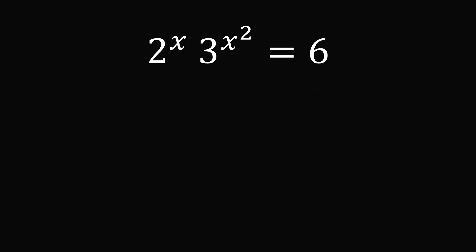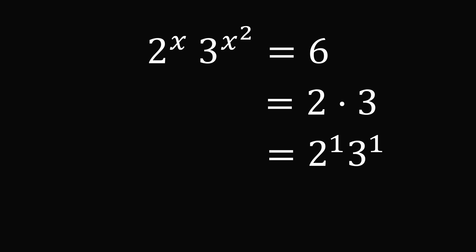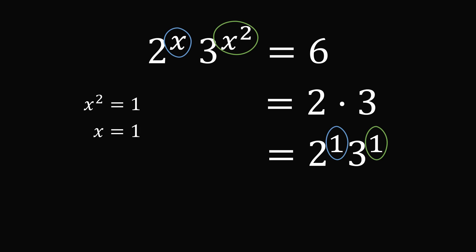Here's how many students would approach the problem thinking that it's very easy. Since 6 equals 2 times 3, which can be written as 2 to the power of 1 multiplied by 3 to the power of 1, it would seem all you need to do is match the exponents. We have 3 to the power of x squared matched to 3 to the power of 1, so x squared equals 1. Then matching 2 to the power of x to 2 to the power of 1, so x equals 1.